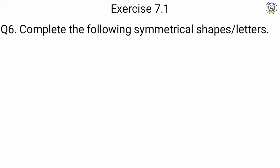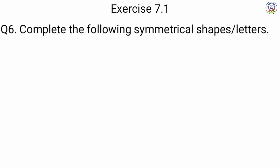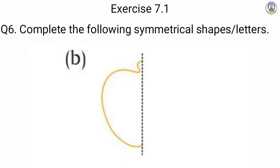Next is question number 6: Complete the following symmetrical shapes or letters. हम लोग को जो symmetrical shapes और letters दिये गये हैं उनको complete करना है. For A, we have a figure like D but it is half, so we will complete it. For B, we have a shape like a half apple, so we will draw the other part of the apple to make it full.